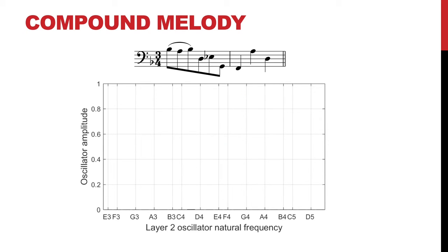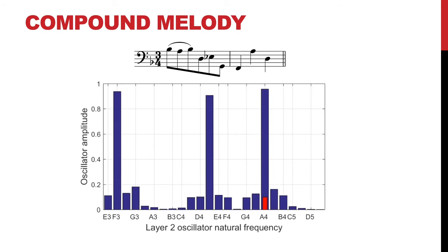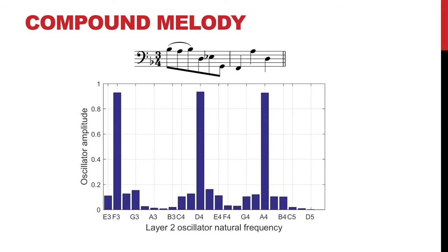Compound melody, also called pseudopolyphony, is a technique of creating multiple melodic lines out of a single line. For example, this solo cello piece by J.S. Bach creates an impression of three simultaneous melodic lines, although only one tone plays at a time. The response of the oscillator network successfully replicates the perception of compound melody.